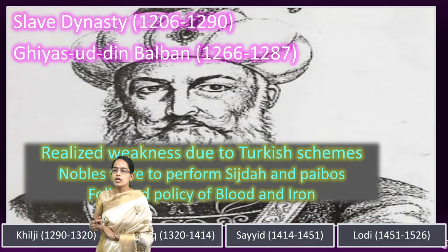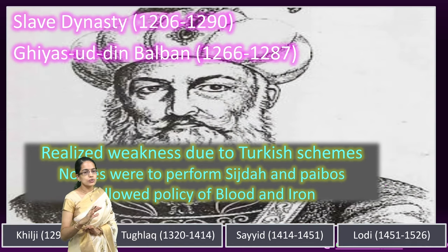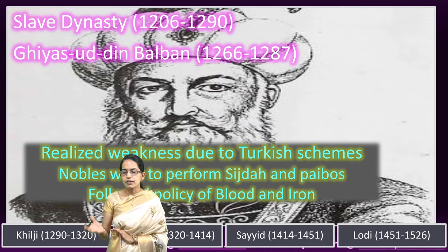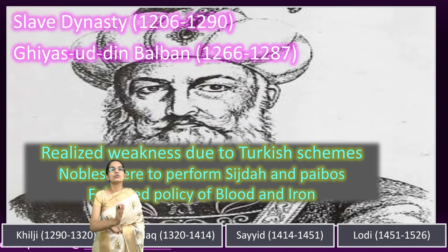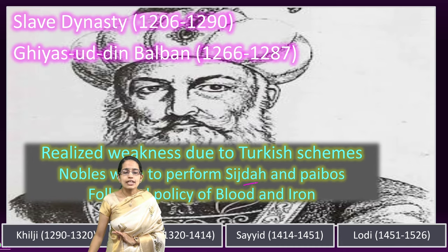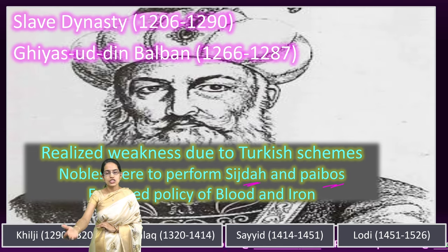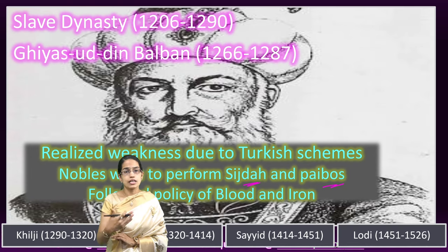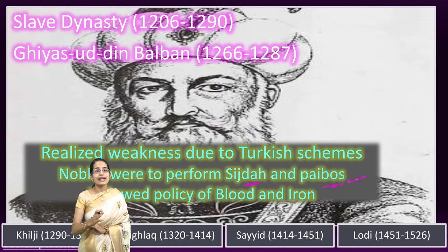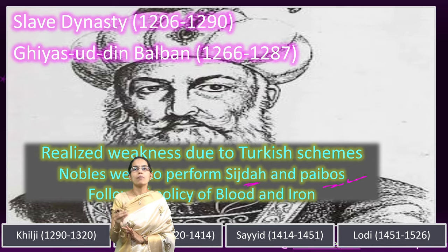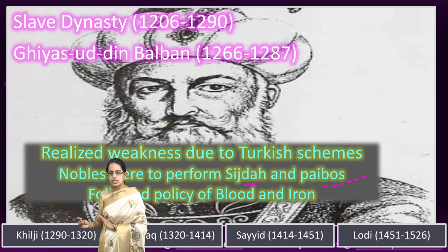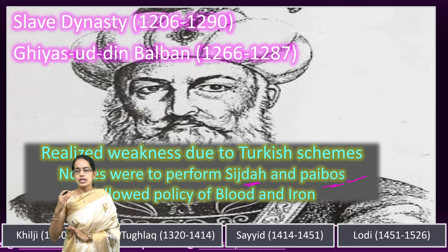Ghiyasuddin Balban is known for the developments during his 20 years in power. He totally weakened the power of the nobles and maintained a clear distinction between the sultan and the nobles. It is believed that he enforced two rituals: Sijda, meaning lying prostrate before the king, and Paibos, meaning kissing the feet of the king. Both of these acts were to be performed by the nobles.